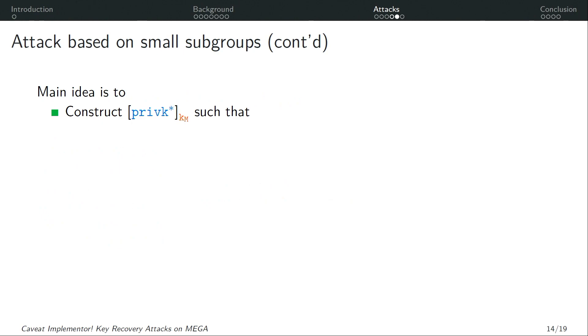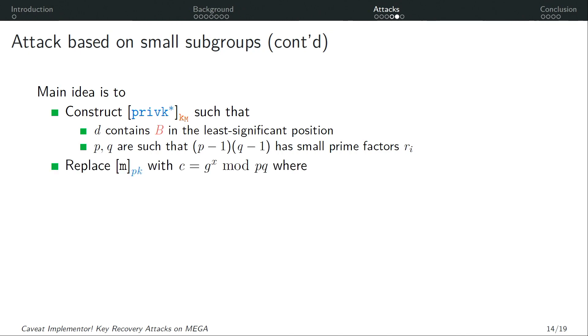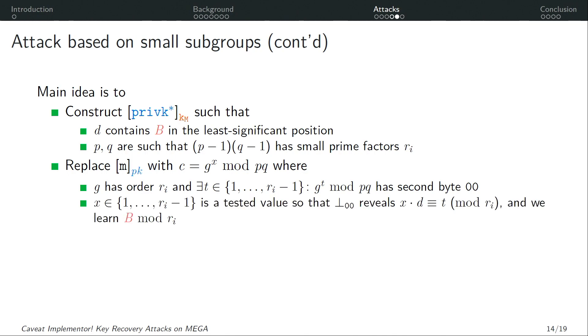Now because this is followed by a length check on the plaintext it essentially means that the error reveals whether the second byte of the plaintext is zero. And again this error is sent to the server and is distinguishable from all of the other errors. Now the main idea is again to construct a modified encryption of the priv key. But in this case D will contain the target plaintext in the least significant position. And P and Q will be such that the product P minus 1 times Q minus 1 will have a number of small prime factors ri. In this case we also replace the RSA ciphertext with a value that will be of the form G to the X mod PQ where G has order ri in the multiplicative group of integers mod PQ and there we know that there exists a value T such that G to the T mod PQ has second byte zero.